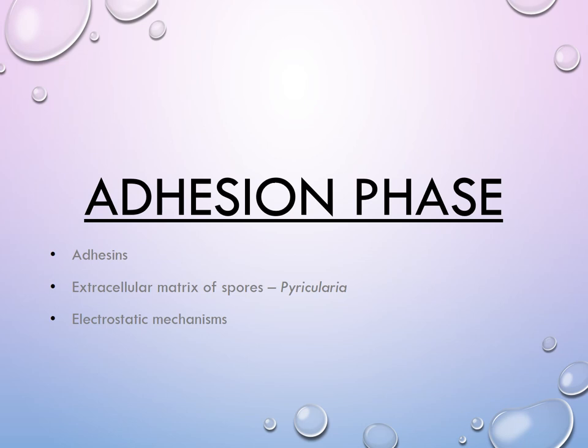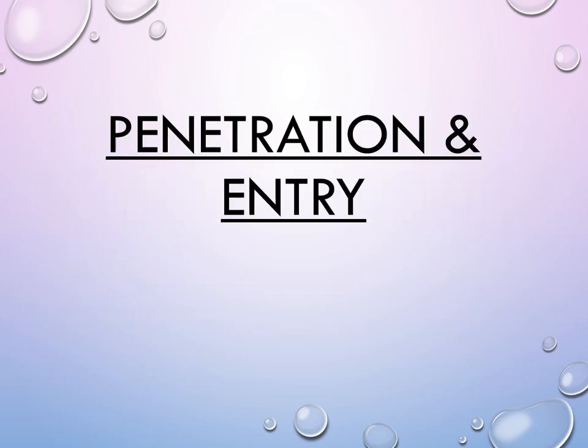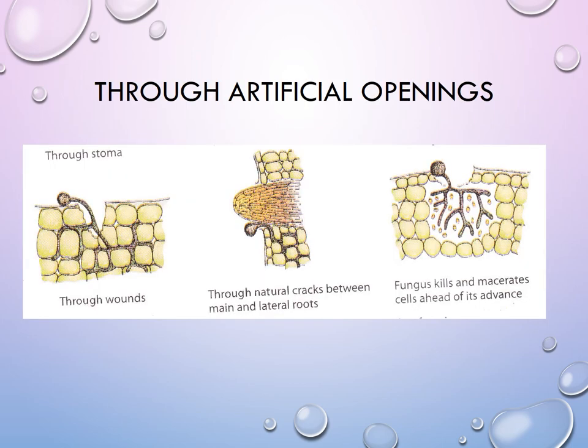After pre-penetration and adhesion, the organism has to get inside. It has to pass through the external protective layers of the host like cuticular wax, the cuticle, pectin, and the cell wall. Penetration is possible by three ways: entry through artificial openings, entry through natural openings, or by mechanical force — that is, direct penetration.